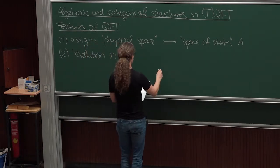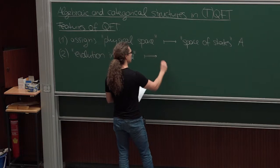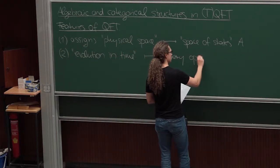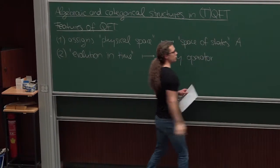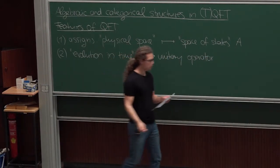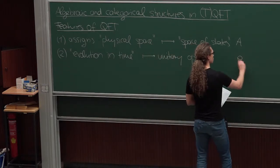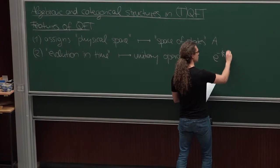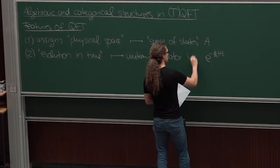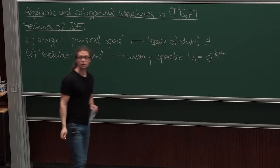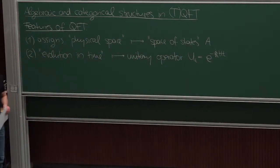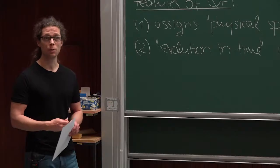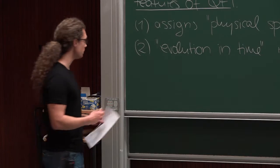So to evolution in time, we associate a unitary operator on the space of states A, which is of the form e to the minus i over a constant h times t, where t is time. I want to call this operator U of t — unitary evolution along the time t — where h would often be interpreted as the Hamiltonian of the system that we consider.